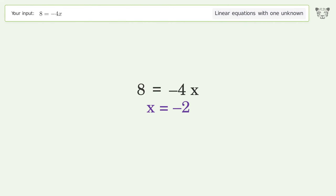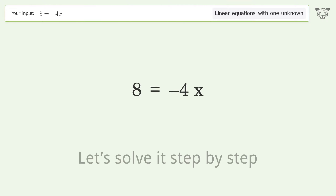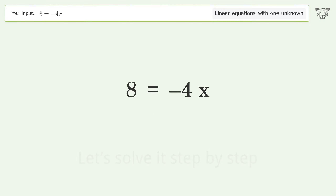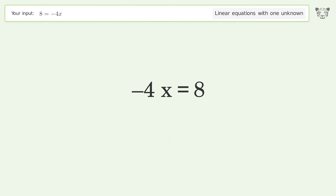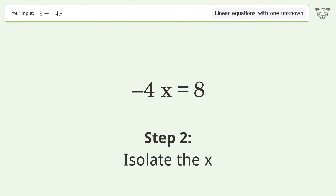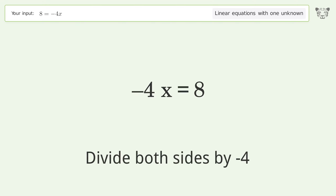You asked Tiger to solve this. It deals with linear equations with one unknown. The final result is x equals negative 2. Let's solve it step by step. Swap sides.